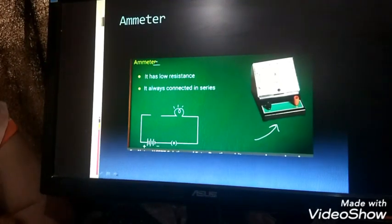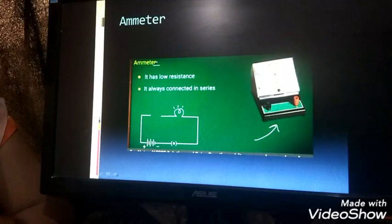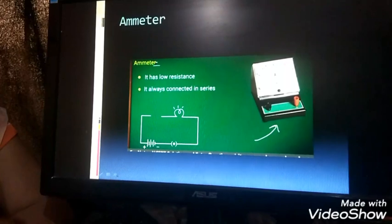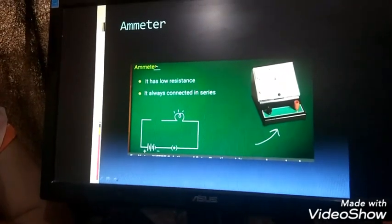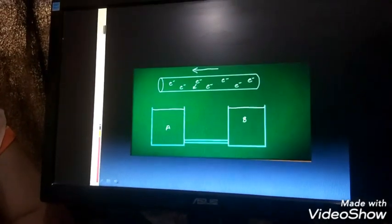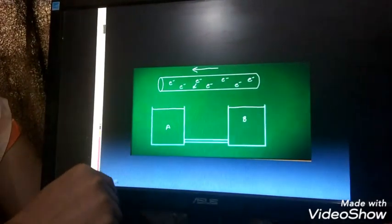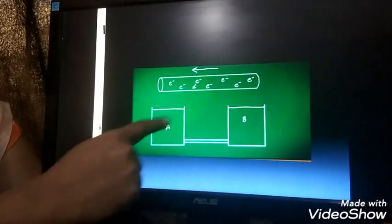Now I said that for the flow of current we need a force. So to understand this force, we will consider this example where we have two beakers which contain water at the same level.